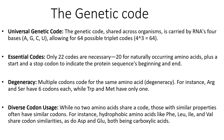The genetic code, shared across organisms, is carried by RNA's four bases: adenine, guanine, cytosine, and uracil. Remember, thymine is not present — that's only in DNA. It's replaced by uracil in mRNA. This allows for 64 possible triplet codes.